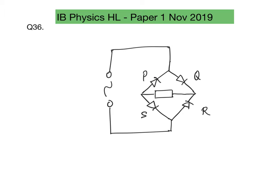Question 36 is on full wave rectification and an AC potential is applied. Current flows in this direction — it will conduct to Q, pass through the resistor from here, and conduct to S.